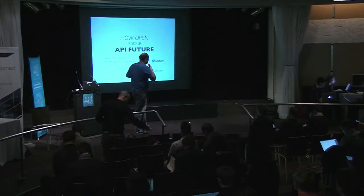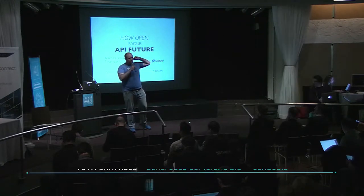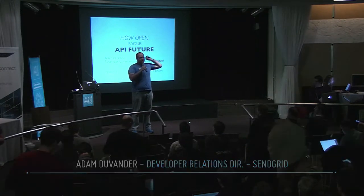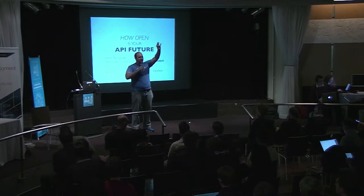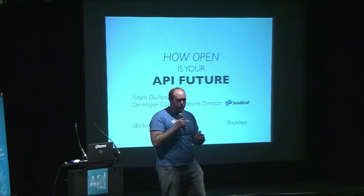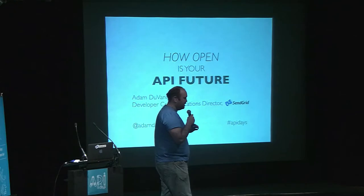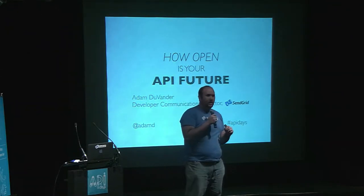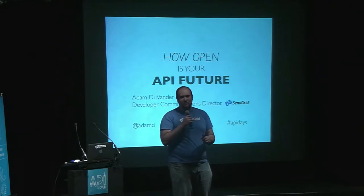I wanted to do a quick show of hands. Who provides an API that others can consume? And then who consumes a public API? There probably should be more hands for that one, and I definitely noticed a lot of overlap. So my talk today is about these open APIs, and the trends I've noticed in watching them over the last few years, and the trend in what open is or how many of them are open.